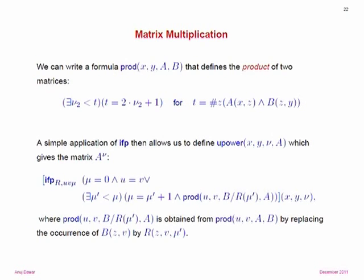For instance, matrix multiplication. Say we have a set which we think of as the domain — the underlying thing which indexes the rows and columns of our matrix. We have two binary relations on the set, A and B, which we think of as 0-1 matrices over the two-element field. We want to define their product: write down a formula with two free variables X and Y which, given binary relations A and B, defines the binary relation which is the matrix product.